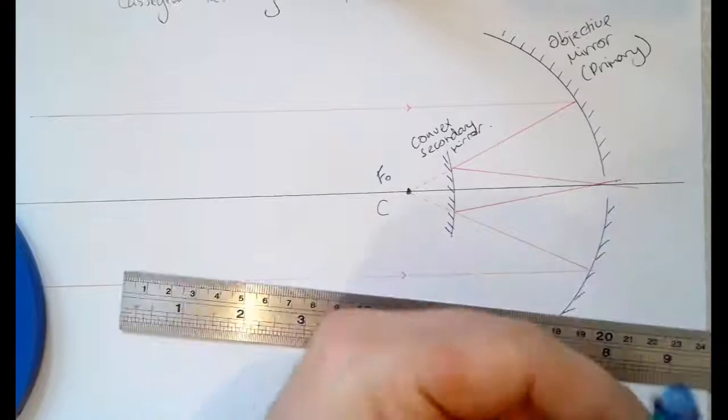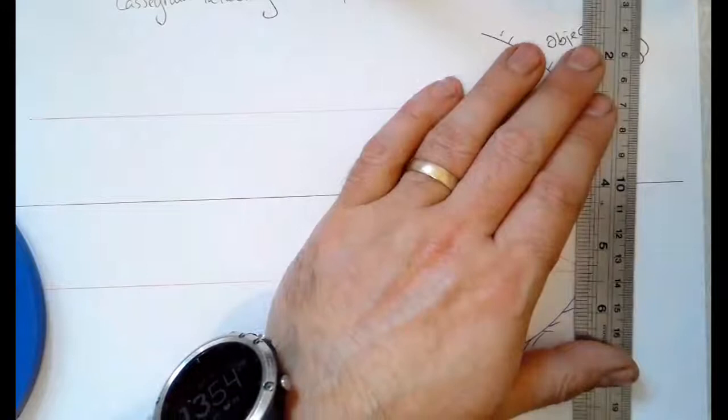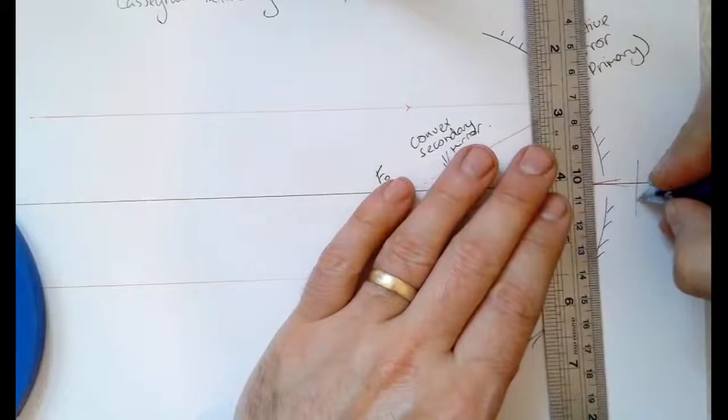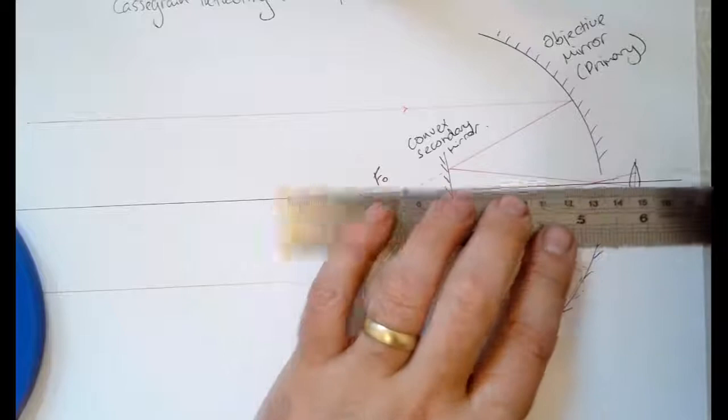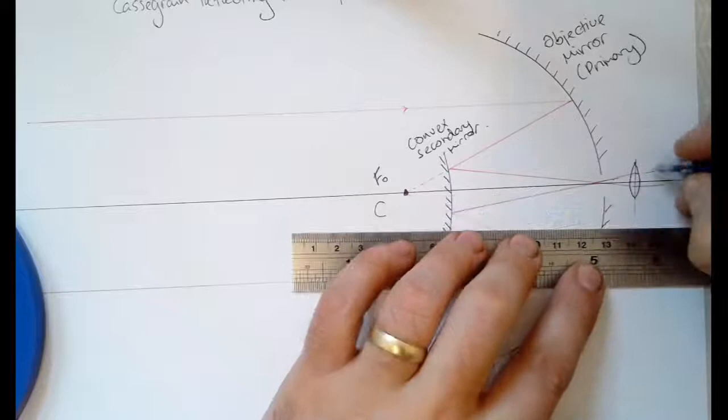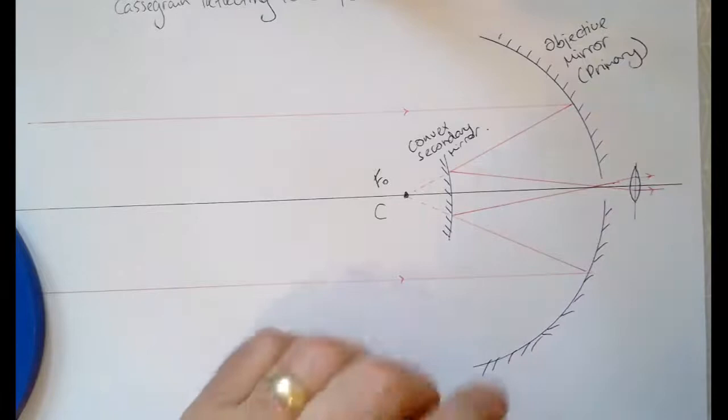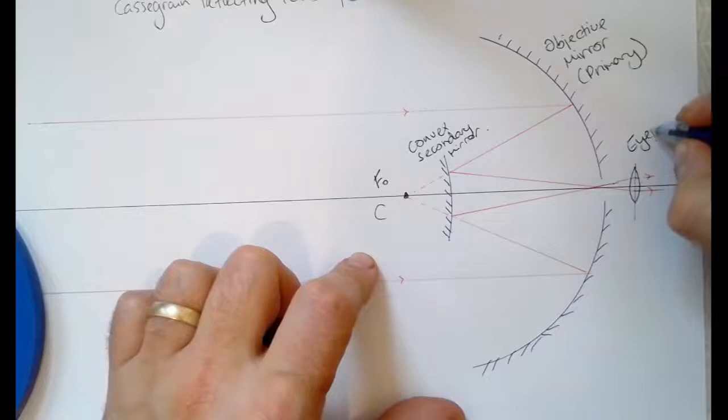Once they exit the primary mirror, we now want a lens axis for a converging lens. That looks like that. This is called the eyepiece lens. You have to make sure that your rays of light get to the lens axis of the eyepiece lens.